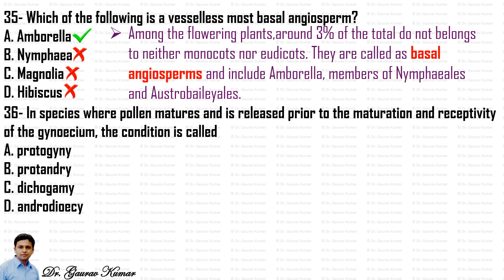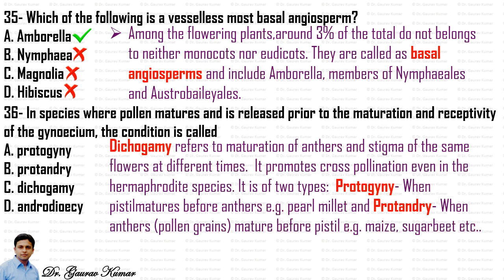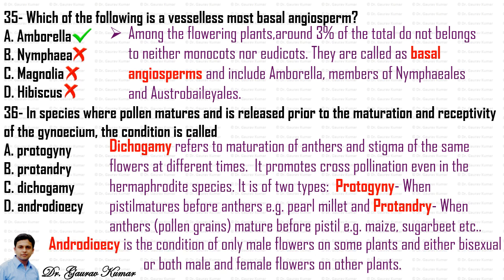Next question: in species where pollen matures and is released prior to the maturation and receptivity of the gynoecium, the condition is called protogyny, protandry, dichogamy, or androdioecy? Dichogamy refers to the maturation of anthers and stigma of the same flower at different times, promoting cross-pollination. It is of two types: protogyny, where the pistil matures before the anther (e.g., pearl millet), and protandry, where the anther matures first (e.g., sugar beet). The correct option is protandry.